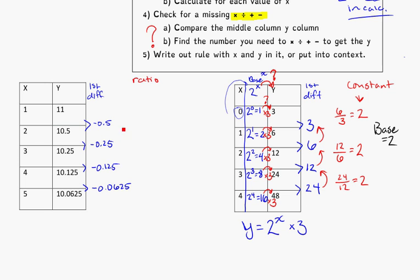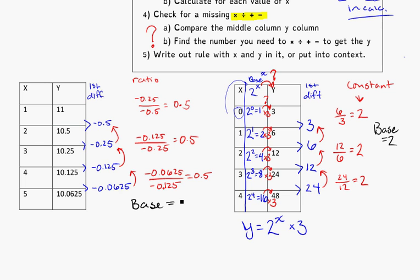So the ratio, remember we start with the number below and do it on top of the number above. So that's negative 0.25 over negative 0.5. This simplifies to 0.5 or a half if you want to think about it that way. Going again, negative 0.125 divided by negative 0.25, 0.5. And one more time, just to double check. Again, putting the number below on top of the number above it. So you can see my ratios here are constant each time. So my base is going to be equal to 0.5.